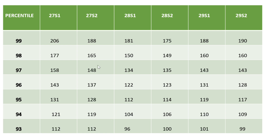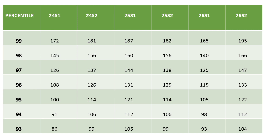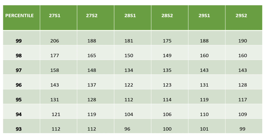This covers three days, and another three days are shown here. The toughest slot overall is 26th session 1, where 165 marks gives 99 percentile and 140 marks gives 98 percentile. The easiest slot is 27th shift 1, where 206 marks gives 99 percentile and 177 marks gives 98 percentile. So 26th shift 1 is the toughest and 27th shift 1 is the easiest.